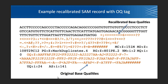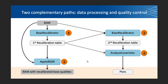Here is an example recalibrated SAM record with the OQ tag. You can see in orange at the top, right after the reads, the recalibrated base qualities. In the meta information section, there is the OQ tag and the original base qualities — it takes up as much space, or double the space, as your sequence data.